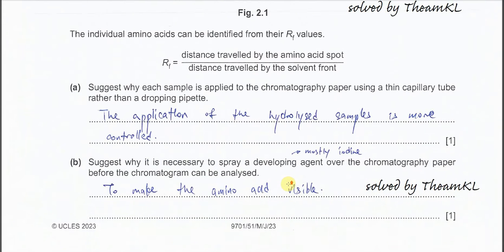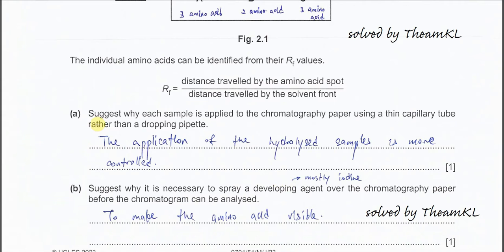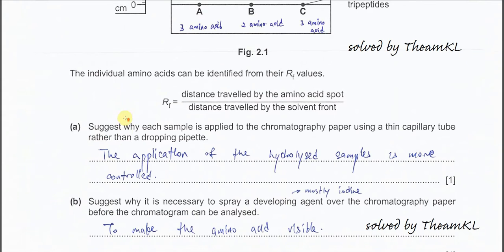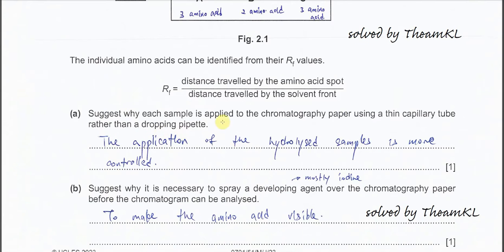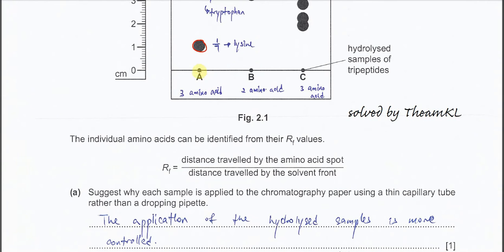Okay. So let's get back to the part A. Suggest why the sample is applied to chromatography paper using the thin capillary tube rather than dropping pipette. So thin capillary tube, it can give a very tiny spot.